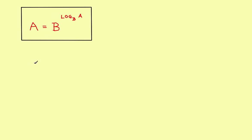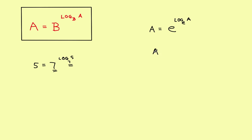As an example, suppose we have a base five and we want to change that into a base seven. Using the rule, just take seven and raise it to the log of five to the base seven power — and these two are equal. In our problem, we've got a base a and we want to change it into a base e. Using this rule, you raise e to the log of a to the base e power. A log to base e is the natural log, so that turns into the natural log of a. That's where that change comes from.